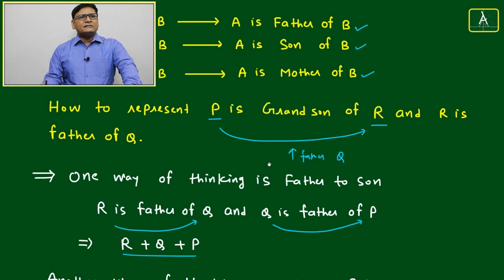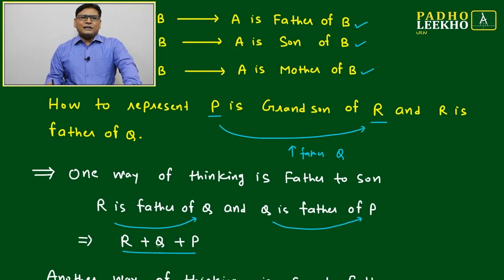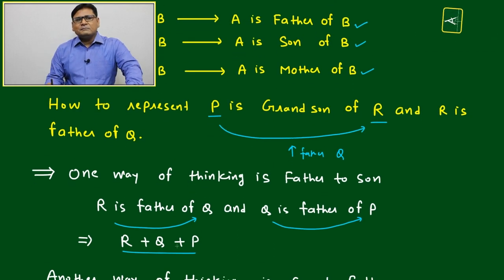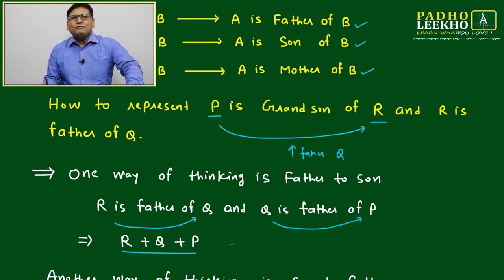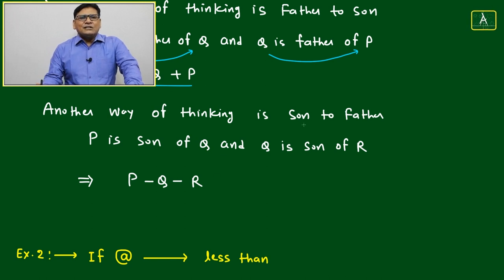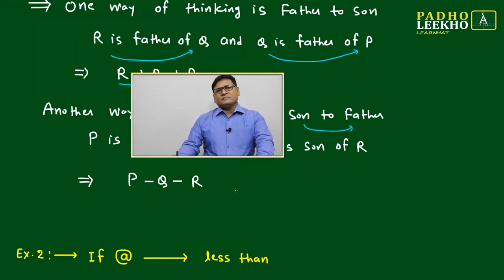What is the meaning? R plus Q means R is father of Q. Q plus P means Q is father of P. The meaning is P is grandson of R. Or we can think another way, son to father, and represent it that way also.